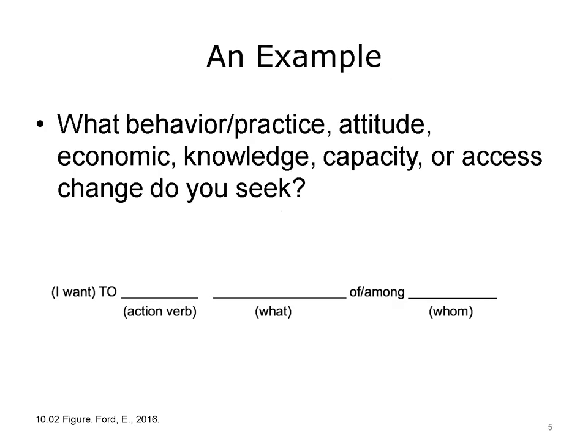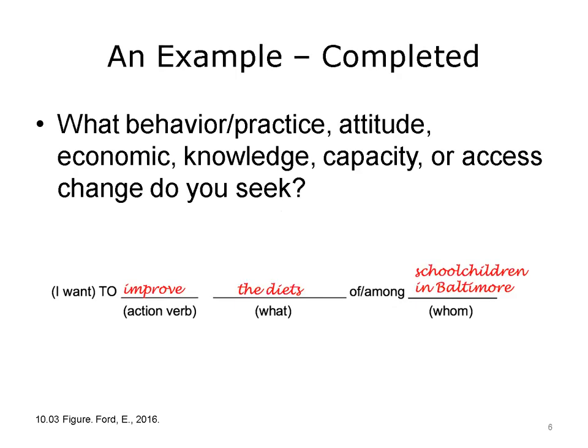For this example, we are thinking of the how, the what — behavior, practice, attitude, etc. — and the whom. The blanks could be filled in to make the goal: 'I want to improve the diets of children among our schools here in Greater Baltimore.' This is a very specific quality goal. You can see that there are many different ways we can go about this.